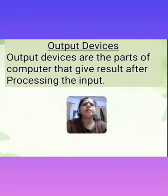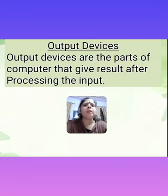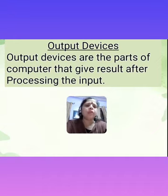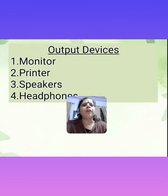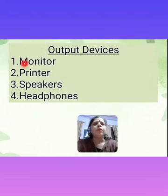Next is output devices. Output devices are those on which we get results. When we give input, processing happens, and after processing the result is shown to us on output devices. We have four output devices: monitor, printer, speakers, and headphones.